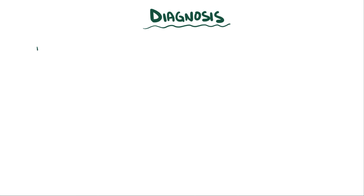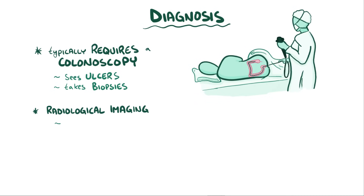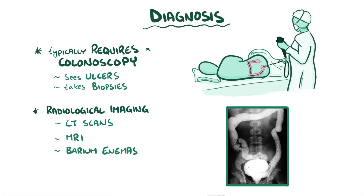Diagnosis of ulcerative colitis typically requires colonoscopy, which is when a long tube with a camera at the end is inserted retrograde through the anus and into the rectum and colon to see the ulcers and take a biopsy. In addition, radiological imaging might be done with the help of a CT scan, MRI, a barium enema — where a liquid is injected into the rectum through a small tube — and an x-ray, which are taken to look for abnormalities in the large intestines.